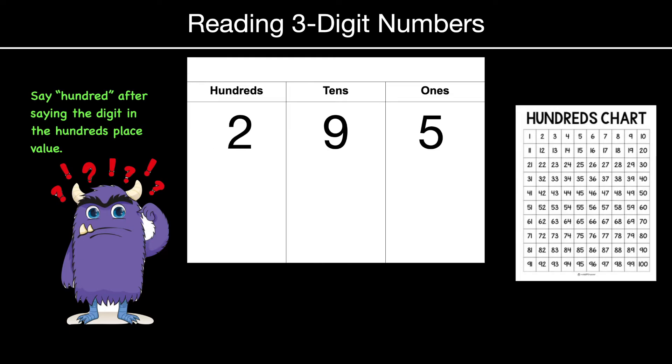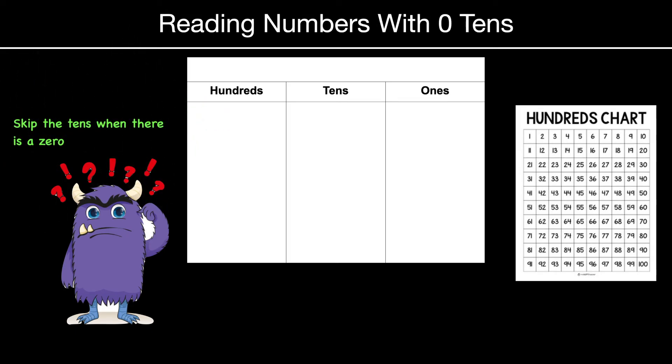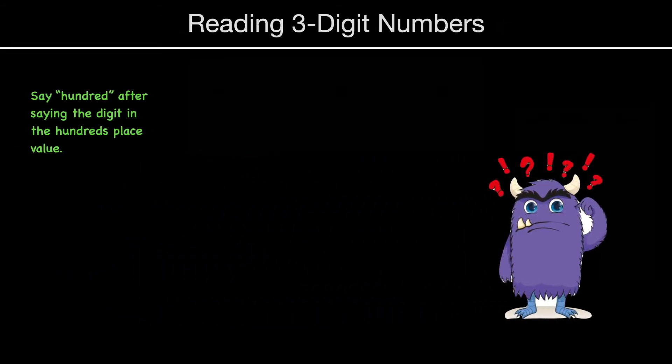This would be 295, because the two, you say 100. The nine and five, you just read like you would on a hundreds chart. That's just 95 for 295. When you read numbers with zero tens, just make sure that you skip over the tens. So this would just be 200, and then you just read this as five, and you can see that five on the hundreds chart there.